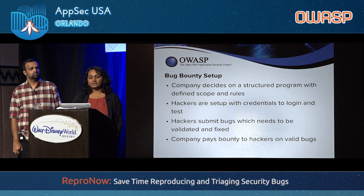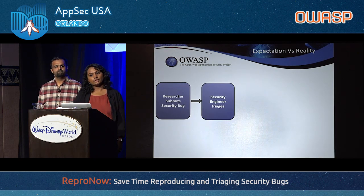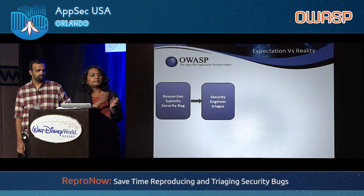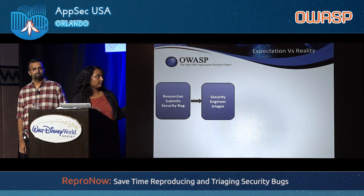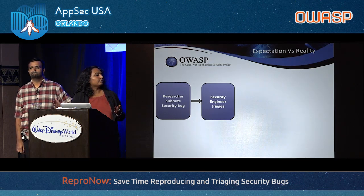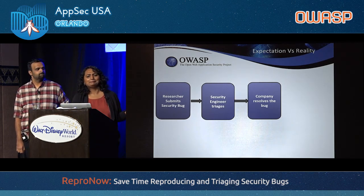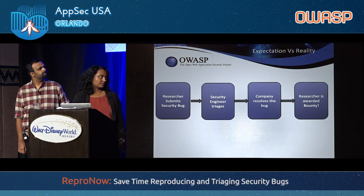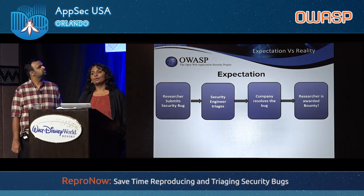Let's look in more detail at what happens when a researcher submits a bug. Triage involves understanding the description, the impact, reproducing the bug, and confirming its validity. Once the bug is valid, the security engineer creates an internal ticket in JIRA or whatever logging system you have, and the developer agrees to fix it. The company resolves the bug, the security posture is strengthened, and the researcher is awarded bounty and keeps looking for more. Wish things were this ideal — this is just the expectation.